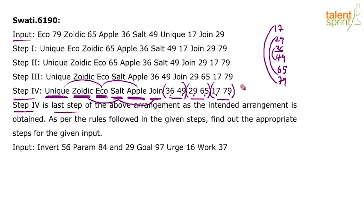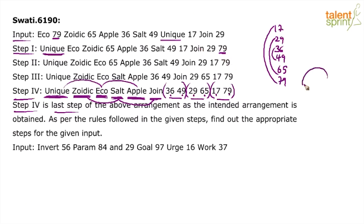Now let's look at the step-by-step process. Getting the output logic alone is not enough — you need to understand each step to rearrange a new input. In step one, the word 'unique' has been brought to the first position because that's where it belongs in the output, and 79 has been moved to the last position. So in each step, we move one word to the extreme left and one number to the extreme right, as per the desired output.